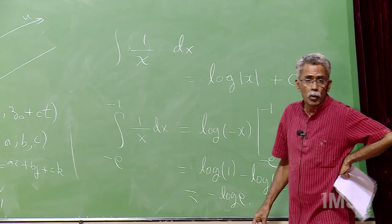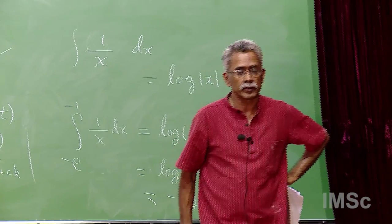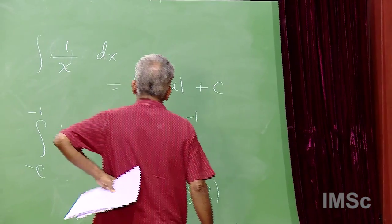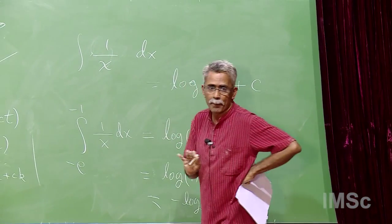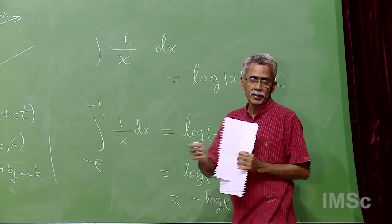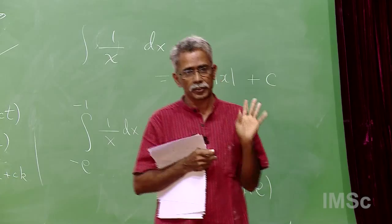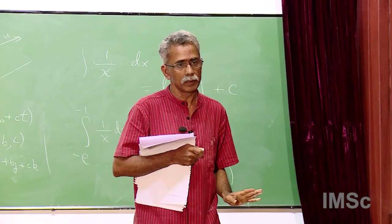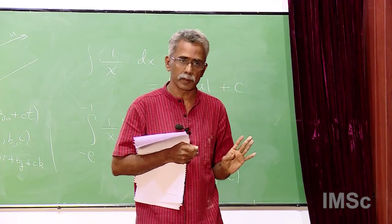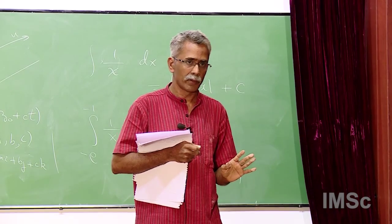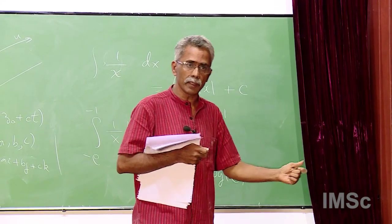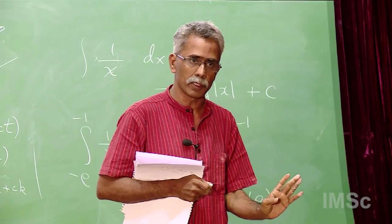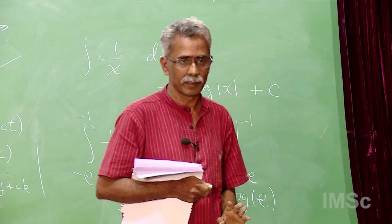The mod function may not be differentiable, but log|x| is differentiable. Mod x is not differentiable only at the origin, but log 0 is not defined — so throw away 0, and mod x is differentiable on ℝ \ {0}. When you write log|x|, the origin is already not in the domain of definition of the logarithm. So it is perfectly okay to write log|x| as the antiderivative of 1/x.